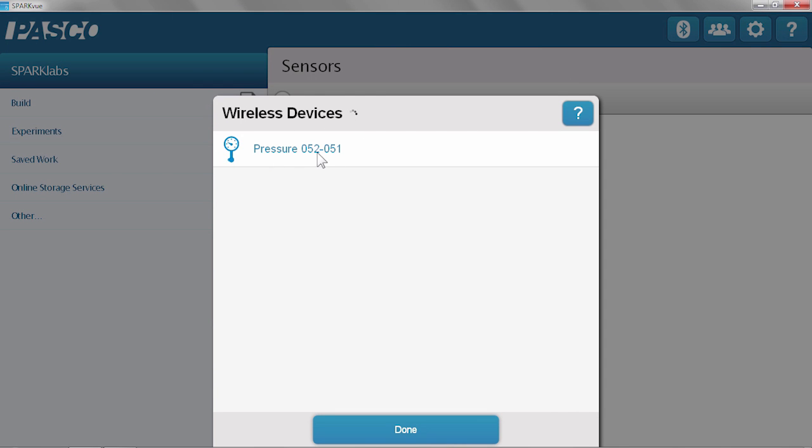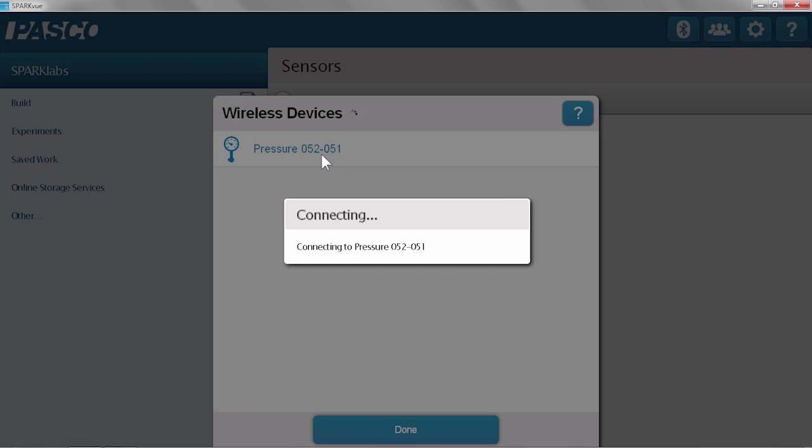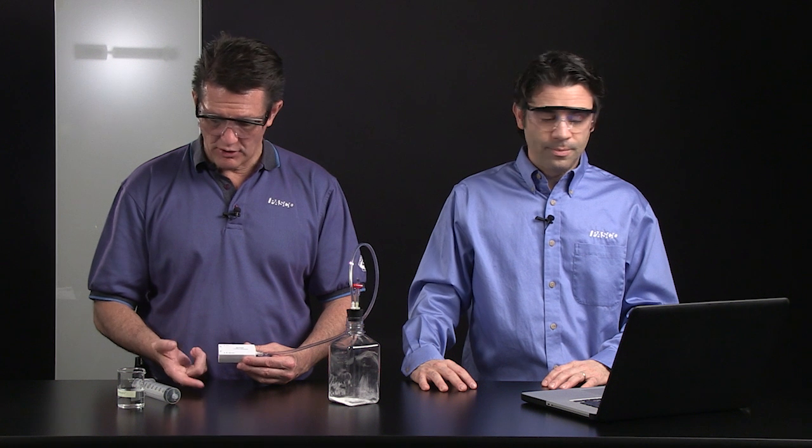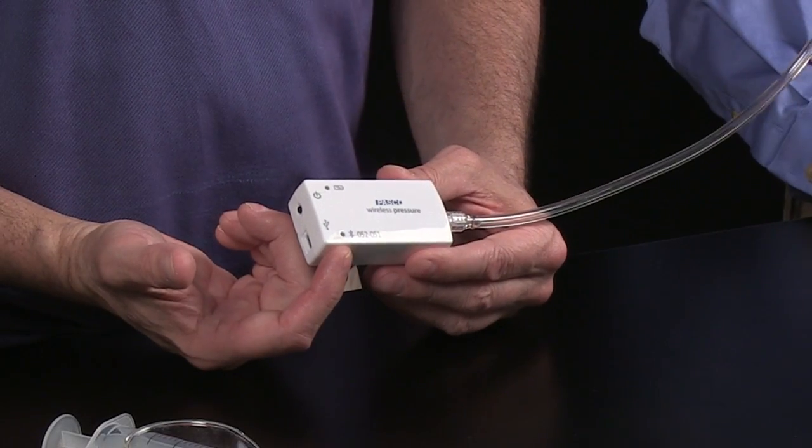I see my pressure sensor. I see the ID number matches the ID number on the device. I'm going to touch that to connect. I'm all connected. I'm going to hit Done. And I know I'm connected when I see the green light start to flash.